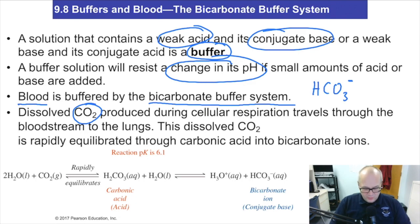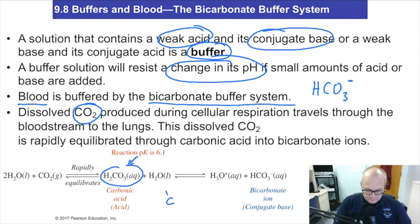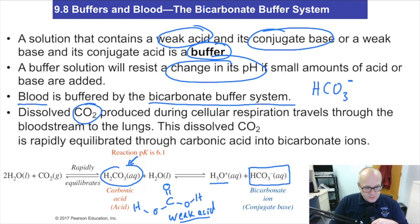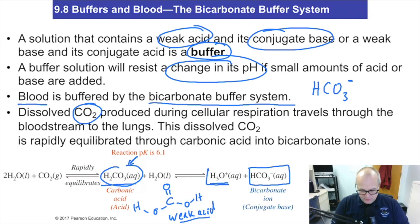CO₂, when it dissolves in water, will immediately form carbonic acid. Carbonic acid is a carboxylic acid on both sides — and it's a weak acid. So it's going to equilibrate to give you hydronium and bicarbonate, and this is of course in equilibrium. So your blood has dissolved CO₂ that immediately equilibrates to give you carbonic acid, which is a weak acid, and that will in turn equilibrate to give hydronium and bicarbonate.